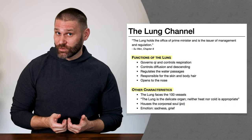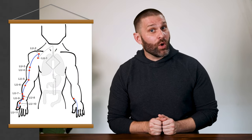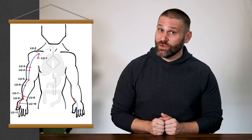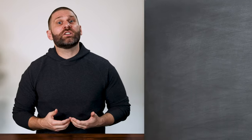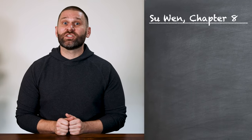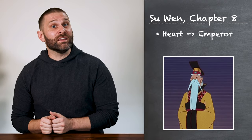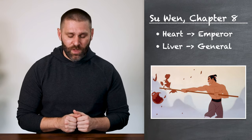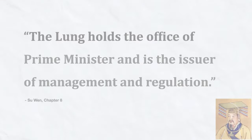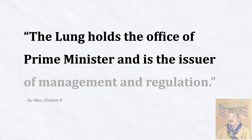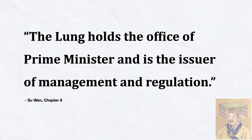Whenever we start talking about a channel, I like to start by discussing the normal functions and characteristics of the channel. Because once we know what a healthy, balanced lung channel is supposed to look like, that will help us understand what happens when things go wrong. It will also give us some insight into what the points on this channel can do, and when we would choose to use them in treatment. I always like to start this discussion with Chapter 8 of the Suwen — the section of the Neijing where each organ is assigned to a government office, where we say the heart is the emperor or the liver is the general. Chapter 8 of the Suwen says: the lung holds the office of prime minister and is the issuer of management and regulation.